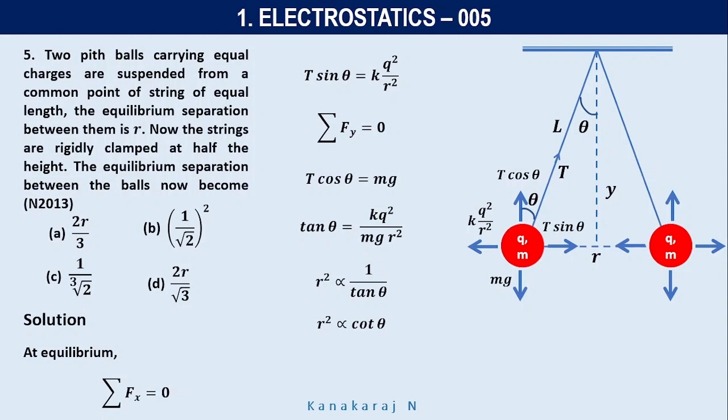Cot theta is nothing but adjacent side by the opposite side. So we can say that tan theta is replaced by adjacent side Y by opposite side R by 2. So the 2 here, once again, is constant. Let us not bring that into the proportionality equation. So R square becomes Y. So R proportional to Y power 1 by 3 is the landmark equation.